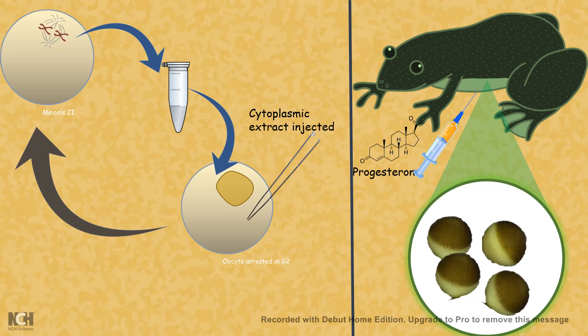So, this factor, people wanted to understand which phase of the cell cycle this factor is important and its concentration is high. Now, clearly, they have an assay. They can take the cytoplasmic extract from a cell at any point of time and inject it into the oocyte which is arrested in G2, an immature oocyte.